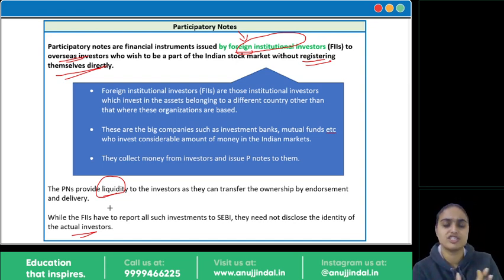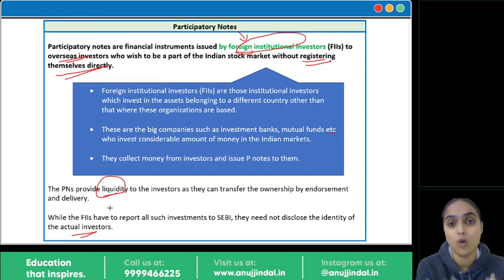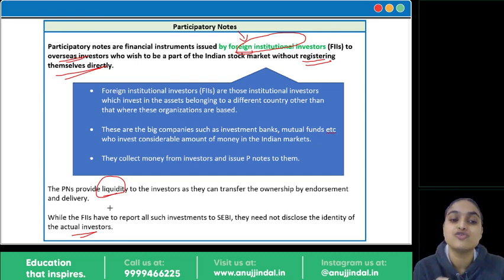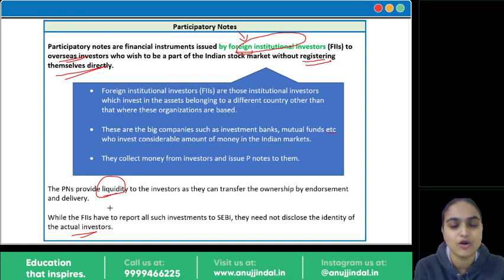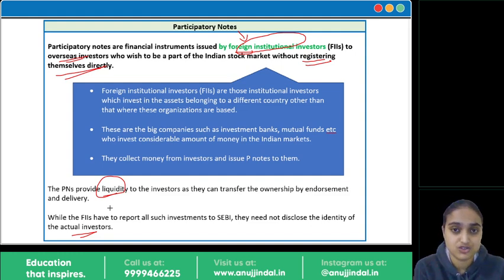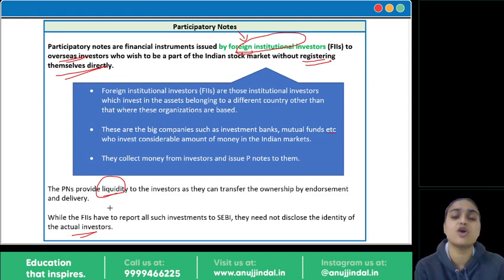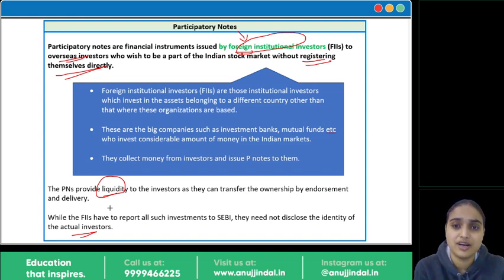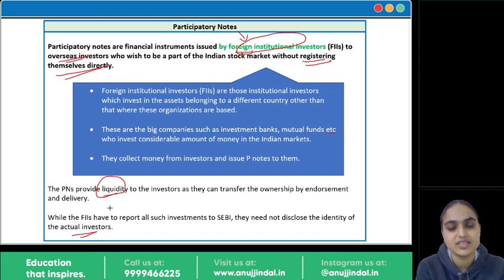Various investors worldwide want to invest in India but don't want to disclose their identities — for them, P-Notes is the route. Participatory notes were introduced to attract more foreign investments into India; you don't need to go through the hassle of registering with SEBI, and without disclosing your identity, you can easily make an investment. India aimed to attract more foreign investments through participatory notes. When foreign investors invest in the securities market, they also attract further FDI.